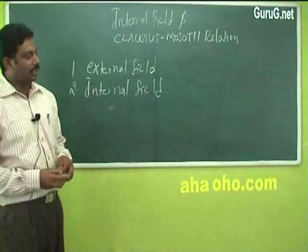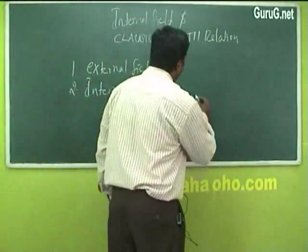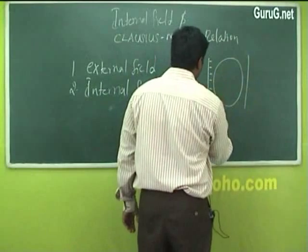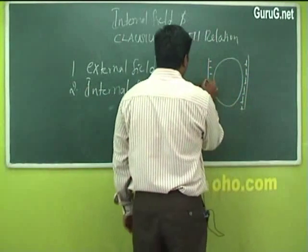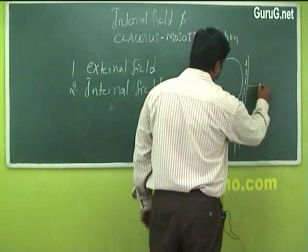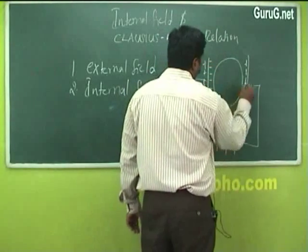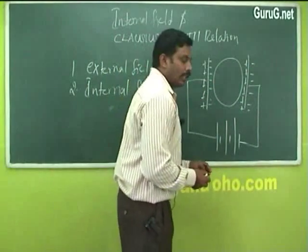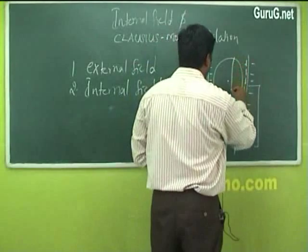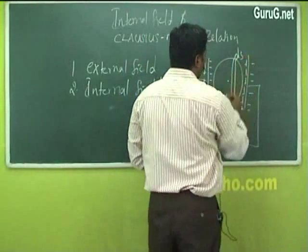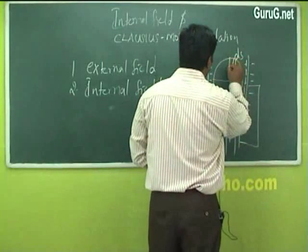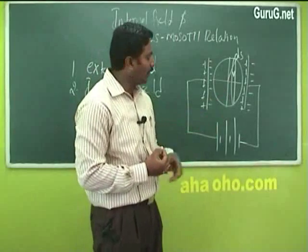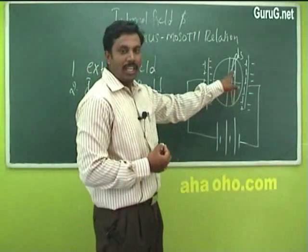To find the internal field, let us consider a small dielectric material which is spherical in shape placed between an electric field — an imaginary sphere of dielectric material. In this dielectric material, let us consider a small ring element ds, where the diameter of the ring is y. The polarization takes place only when placed in the external field, and the internal field is at the center of the imaginary sphere.